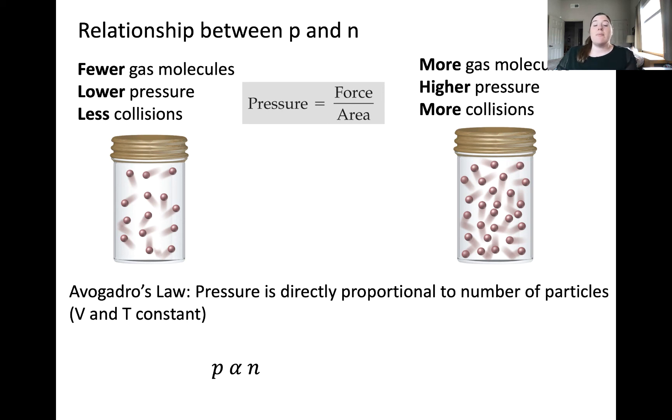Here we're measuring the number of particles using the moles of the sample, where we know from earlier videos that one mole is equal to 6.02 times 10 to the 23rd particles. Here's the mathematical relationship, P1 over N1 is equal to P2 over N2. Again, this implies that if the amount of particles in the container increases, the pressure would also increase.